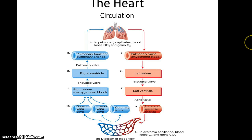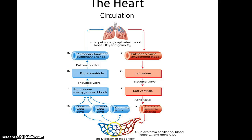Circulation in an adult basically goes like this: deoxygenated blood in the right atrium goes through the tricuspid valve to the right ventricle, through the pulmonary valve to the pulmonary trunk and arteries, up into the lungs to get oxygenated. Then the pulmonary veins return the blood to the left atrium, through the bicuspid valve to the left ventricle, which sends the blood through the aortic valve into the aorta and through all the blood vessels of the body — until finally that blood returns deoxygenated to the right atrium via the superior vena cava, inferior vena cava, and coronary sinus. Our cardiovascular circulation is a giant circle.